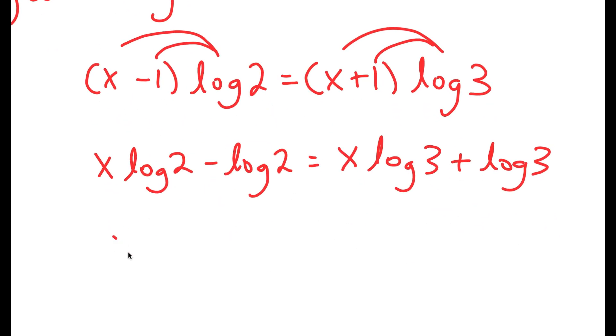For my left-hand side I can factor out log 2, so I get log 2 times x minus 1. And for my right-hand side I can factor out log 3. This is just to check that I distributed it right, and looks like I did because I get the same things.